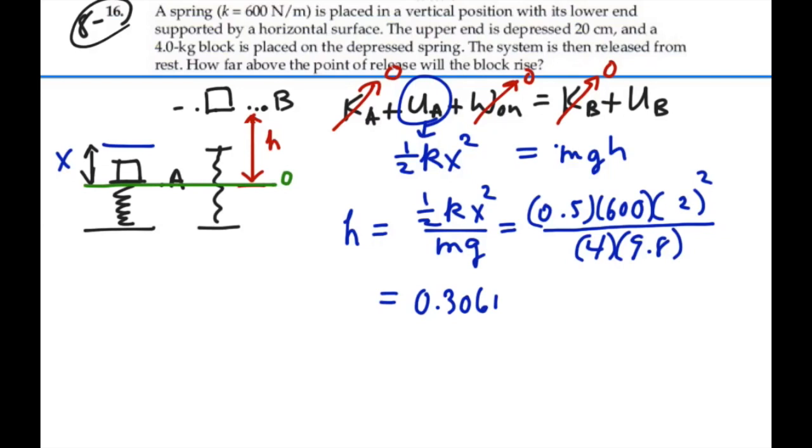So that's how high the block is going to go, 0.306 meters above the point of release, where this was our value of x, 0.2. So 0.306 meters, or if we change that to centimeters, 30.6 centimeters. That's our answer.